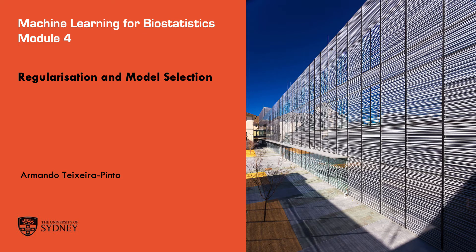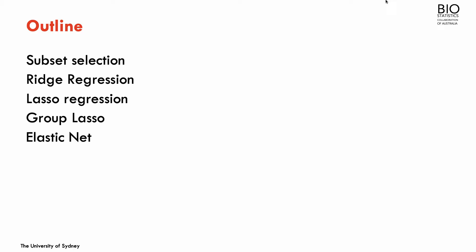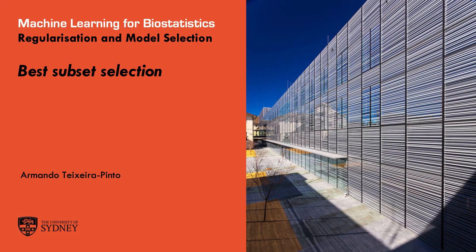In this module, we're going to look at regularization and model selection. In particular, we're going to look at subset selection, including the best subset models, some stepwise procedures like forward and backward, and then regularization methods such as ridge regression and lasso regression. I will also briefly talk about extensions of lasso regression that includes group lasso and elastic nets, although this is really not part of the contents for this unit, but I think it's interesting just to give you an overview about these two extensions.